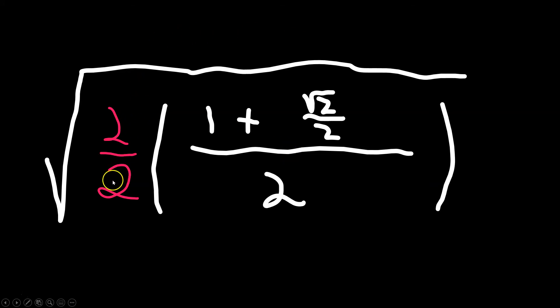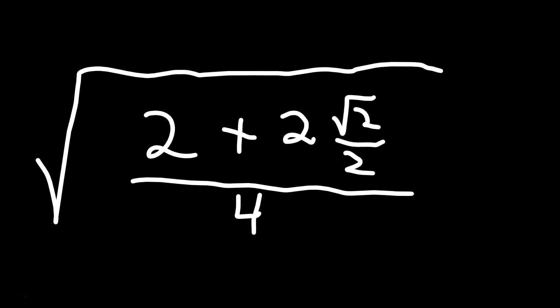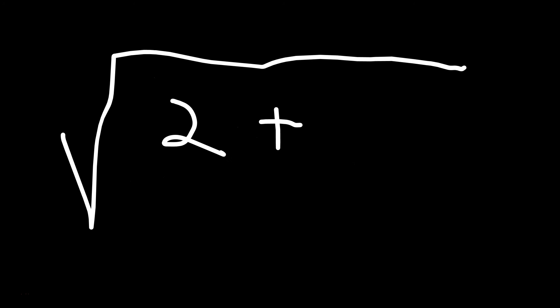And now this red 2 can be distributed in the top and also to the bottom. So that's going to give you the root of 2 plus 2 times the root of 2 over 2, divided by 2 times 2 which is 4. Simplify. So the 2 here cancels with the 2 in that position. That's going to leave us the root of 2 plus just the root of 2 divided by 4.